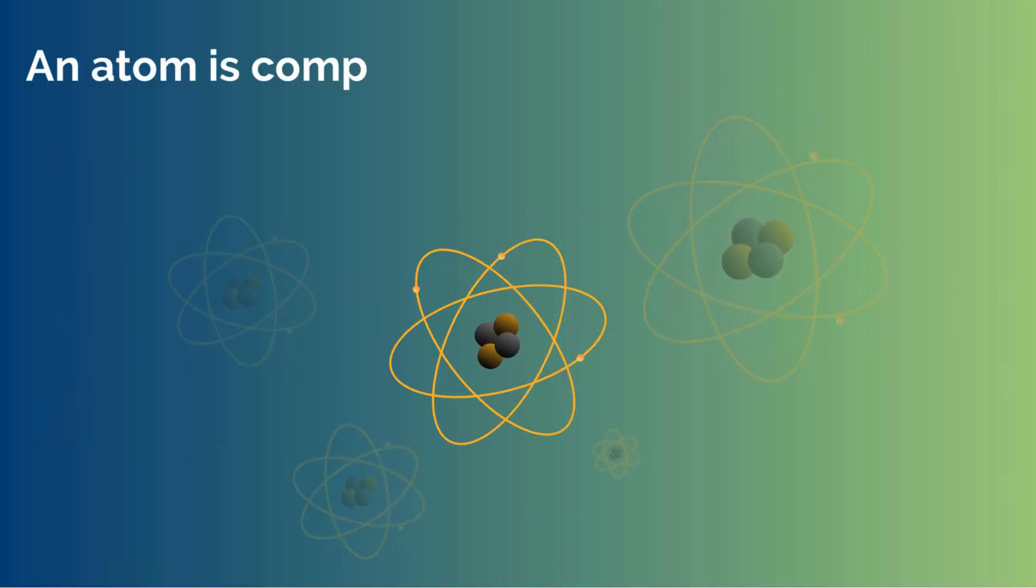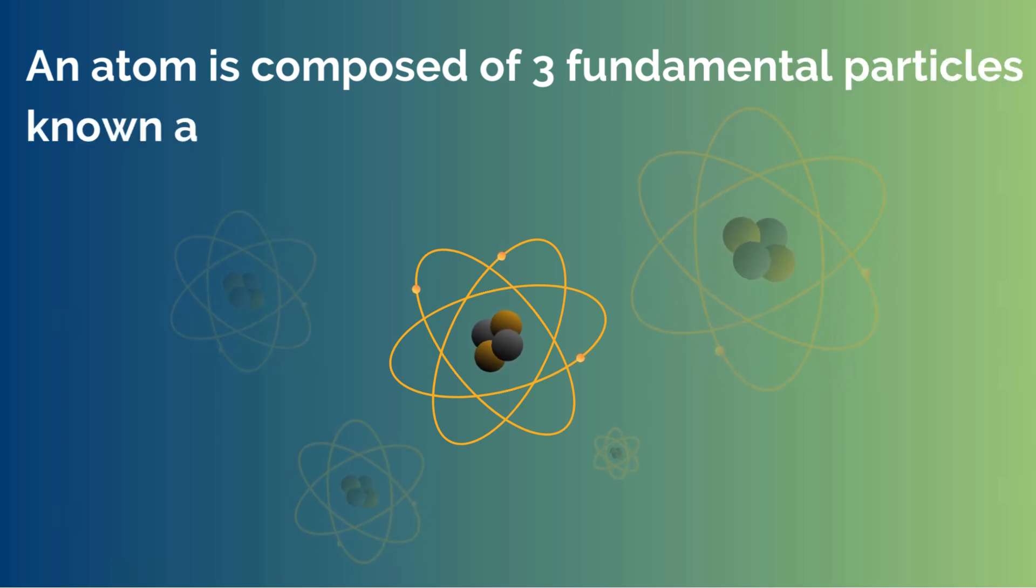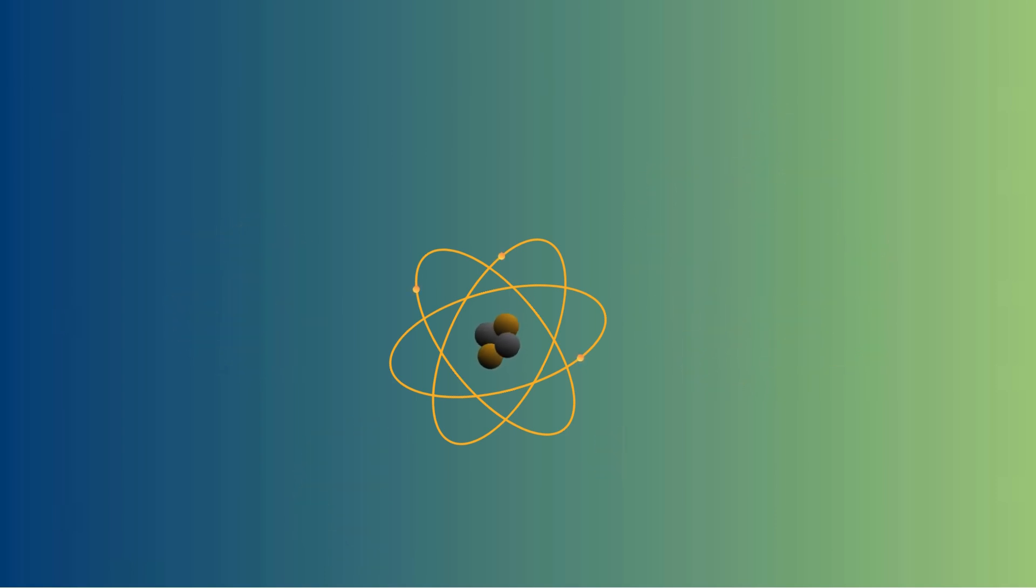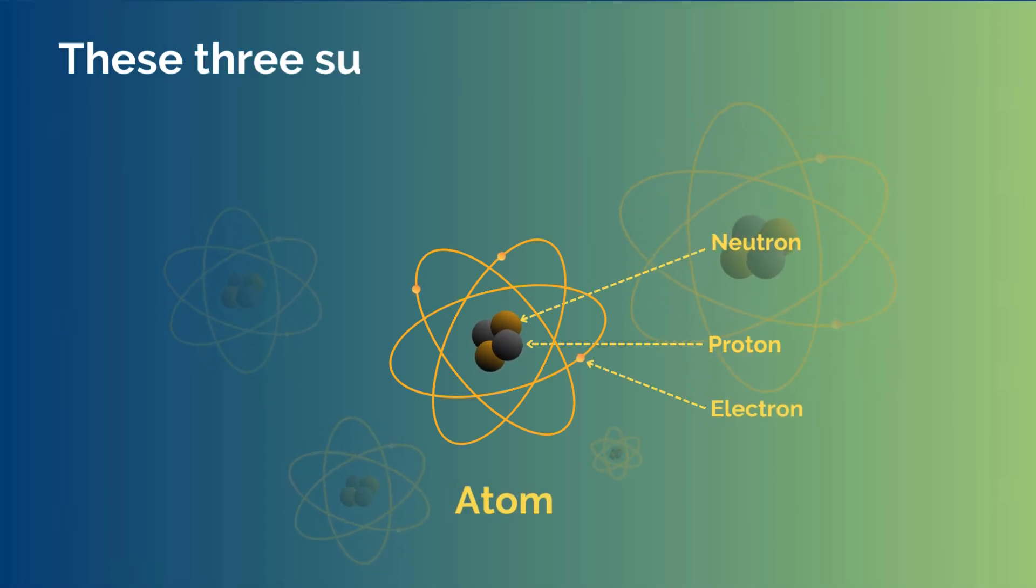An atom is composed of three fundamental particles known as subatomic particles. These three subatomic particles are called electron, proton, and neutron.